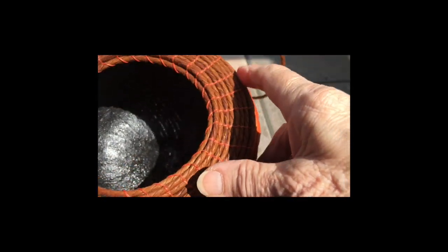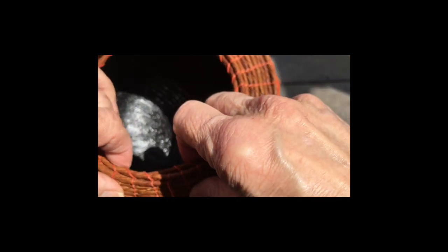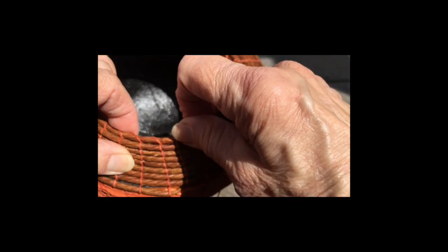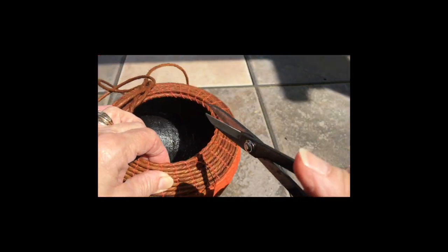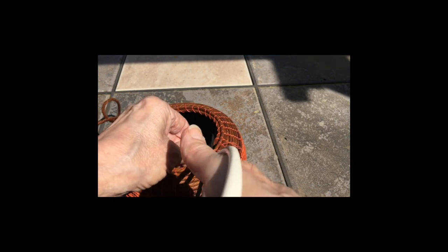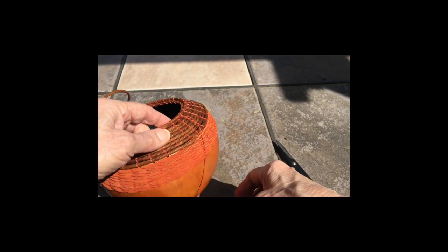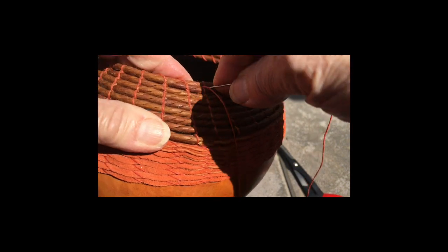Once you've gone all the way around and you get back to where you started, there's like a little pocket there where you can put your end tucked behind. So I'm going to take some sharp scissors and just cut off that end, tuck it behind, and take the last stitch.